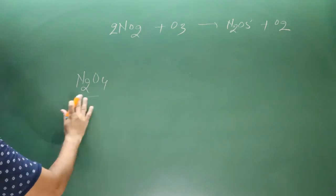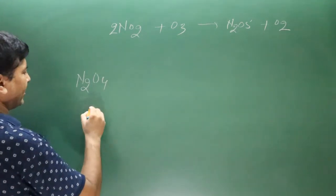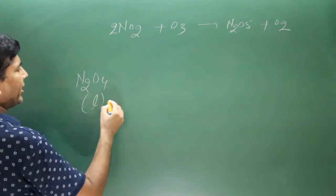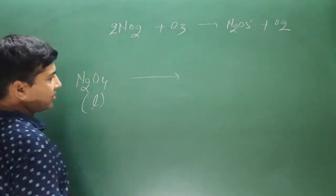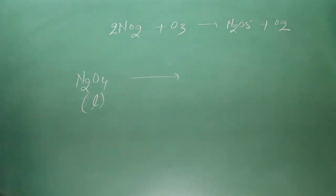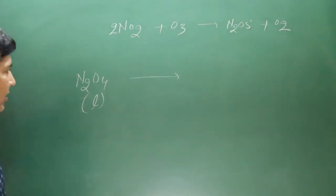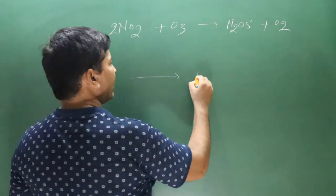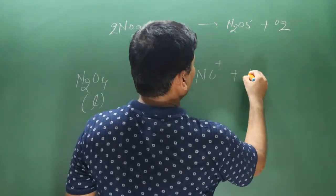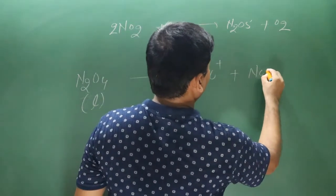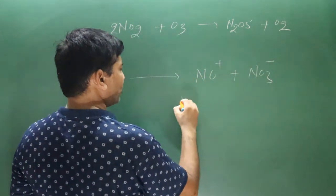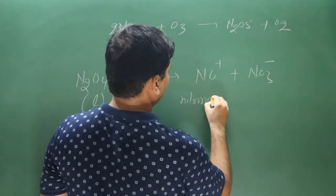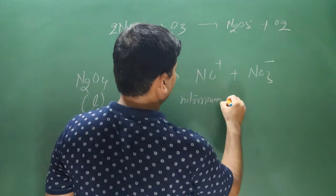N2O4 in the liquid state undergoes self-ionization (like water). It converts into NO2+ (nitronium ion) and NO3− (nitrate ion).